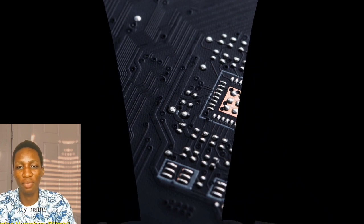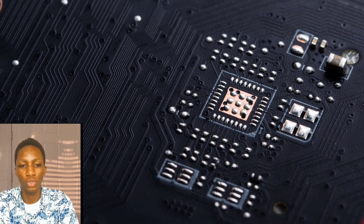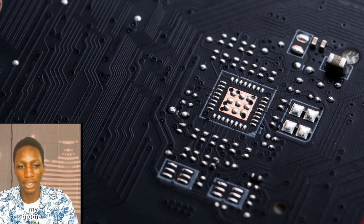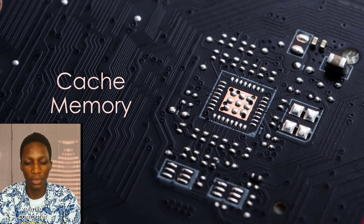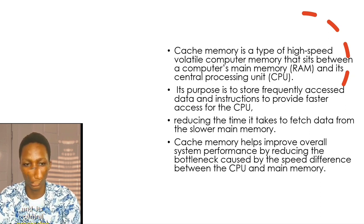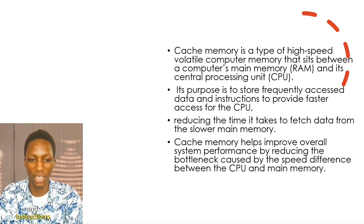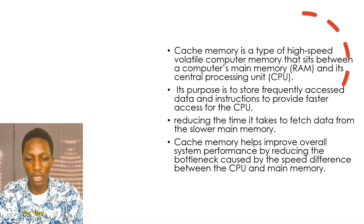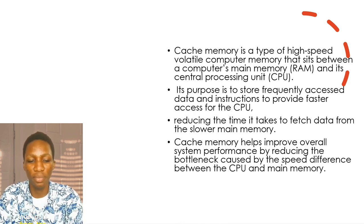Hello viewers. My name is Lalan Hamthoudi, and I'm going to talk about cache memory. In addition to what my colleague said, cache memory is a type of high-level volatile computer memory that sits between a computer's main memory and its central processing unit. Its purpose is to store frequently accessed data and instructions to provide fast access for the CPU, reducing the time it takes to fetch data from the slower main memory.